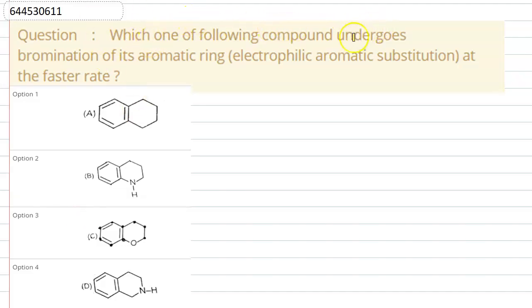Which one of the following compounds undergoes bromination of its aromatic ring, that is electrophilic aromatic substitution, at the faster rate? We have to find out from the given options which will undergo faster bromination of its aromatic ring.